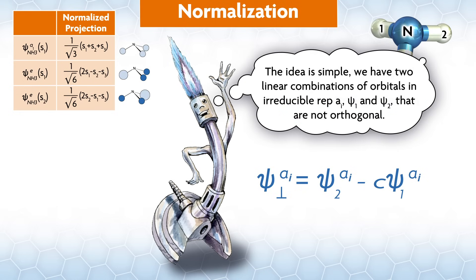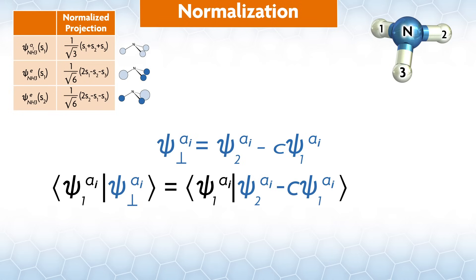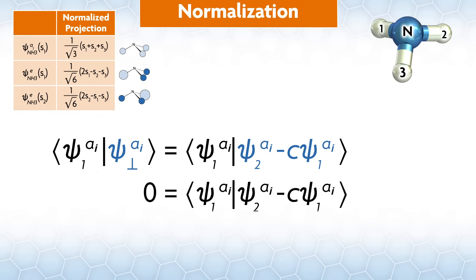The idea is simple. We have two linear combinations of orbitals in irreducible rep ai, psi1 and psi2, that are not orthogonal. We want to find an orbital that is orthogonal to psi1, which we will call, for lack of a better symbol, psi perpendicular. So, what we'll do is take psi2 and subtract out the amount of psi1 that is in it. The amount of psi1 in psi2 will be psi1 times a coefficient, which we'll just call c. To find c, let's left-multiply both sides of our equation by psi1. Now, the left side is zero because, by definition, psi1 is orthogonal to psi perpendicular. I mean, that's what we're trying to do here.